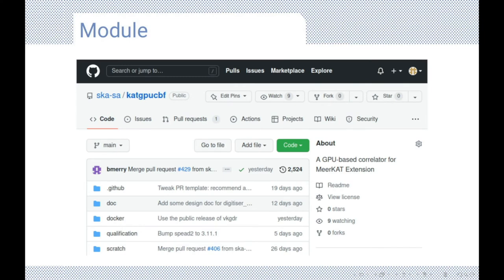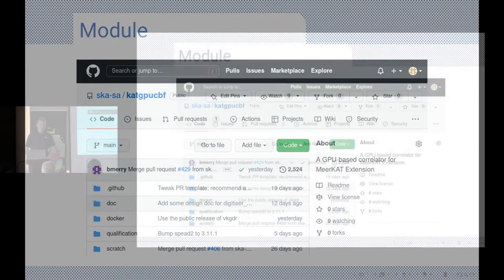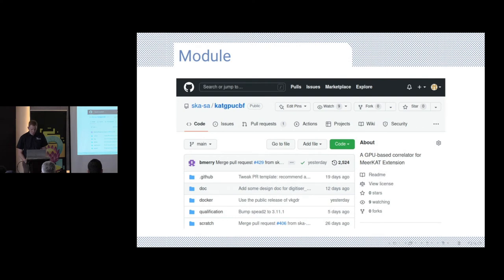And so this is what we've got. Our correlator lives in the cloud in GitHub and its name is CatGPUCBF. So Cat, all of our software modules are called Cat something. GPU is the platform and CBF stands for correlator beamformer which is just the internal naming scheme that we use. And it's open source. So you can go and download it and if you happen to have a telescope array of your own at home, you can correlate it very easily. I'm going to show you how it works.